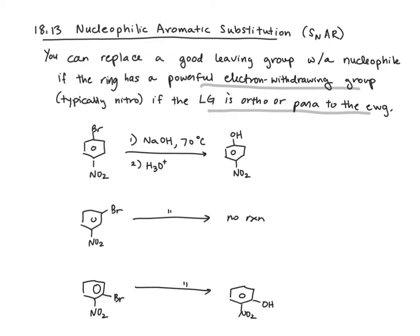For example, take para-bromonitrobenzene and treat it with sodium hydroxide at 70 degrees C, followed by water or acidic water, and you get nitrohydroxybenzene or nitrophenol.